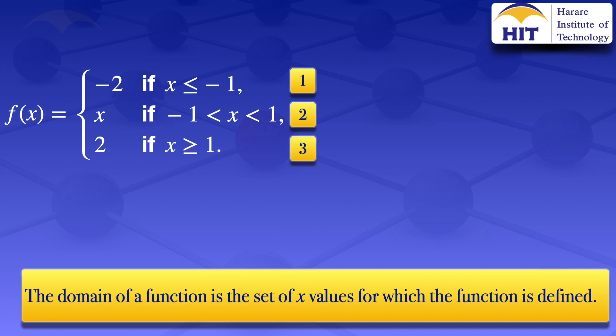Looking at piece number one, we see that x is less than or equals to minus 1 — that's when the function will be defined. We are also told that this is a real valued function. Therefore, the domain for part one is the set of real numbers such that x is less than or equals to minus 1.